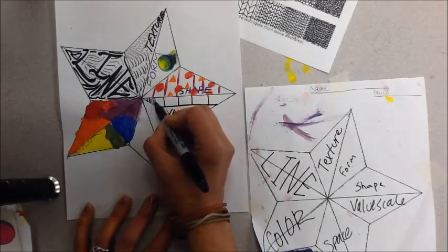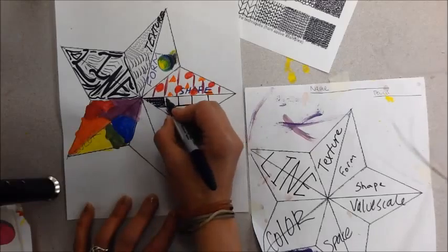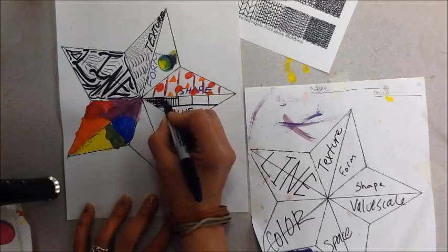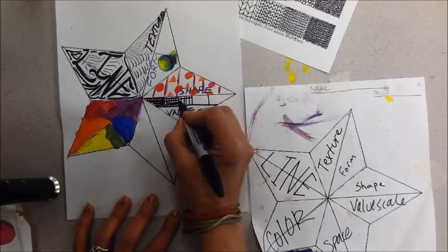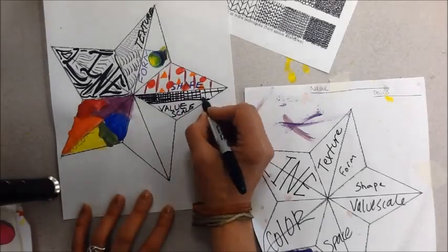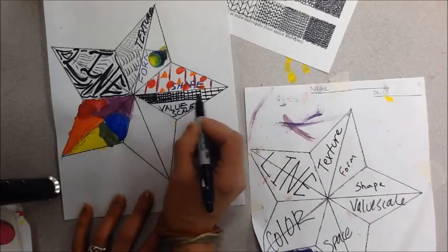And I'm going to do some cross hatching. So now I'm going to get a little lighter so they're going to be a little further apart. And again a little further apart. So then I've got my five different shades.